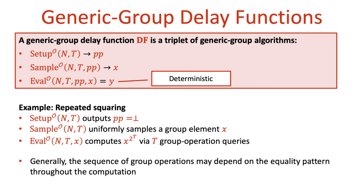On the slide you can see the repeated squaring function in this syntax. In general, the sequence of group operation queries issued by the evaluation algorithm may depend on the equality pattern among group elements throughout the computation, since this information is observable by a generic algorithm.